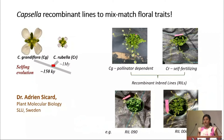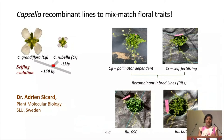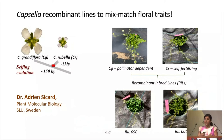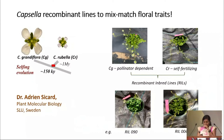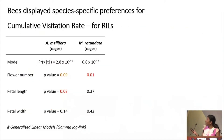We have done a series of experiments using indoor arena experiments and outdoor cages, where we released several different species — for example, Osmia cornifrons and Megachile rotundata, which are solitary bees, and the social bee Apis mellifera — and we try to understand these foraging behaviors.